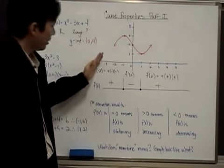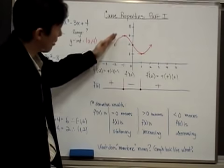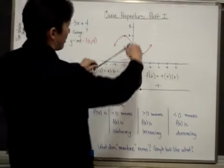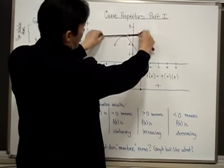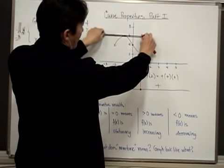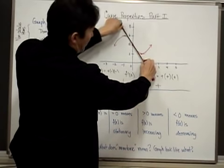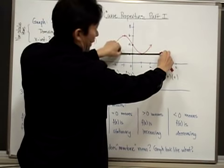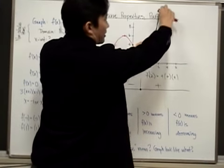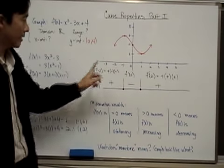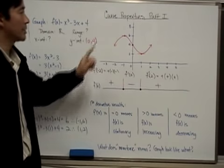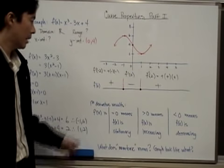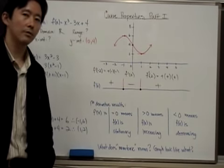Notice that here the function is increasing because the slopes are all positive. You have a stationary point at x equal to negative 1. After that, all the slopes are negative. Then when you get to x equal to 1, the slope is 0 again, and from there on it is positive. So just by looking at the first derivative, we can find a simple way of coming up with a reasonable graph based on the relationship between the first derivative and the original function.